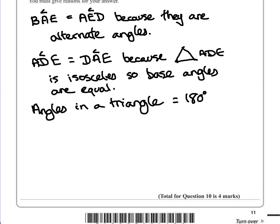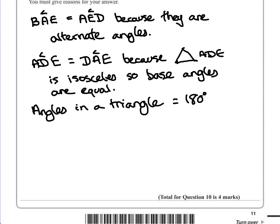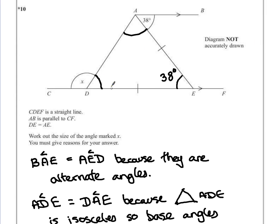So we have angles in a triangle are equal to 180 degrees. So to find our missing angle, which the one we're trying to find was, is it ADE? Yeah, we're trying to find this bottom one.